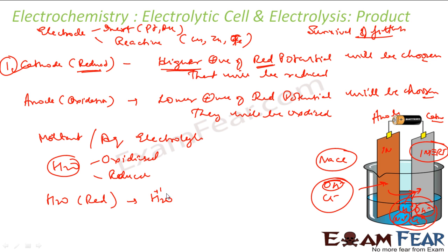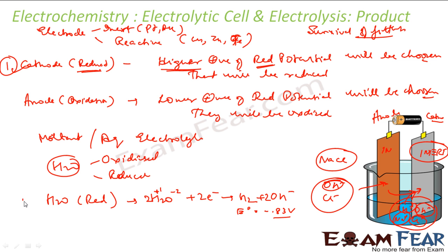For water reduction: hydrogen has a +1 charge and oxygen has a −2 charge, so the only possible reduction is H⁺ becoming hydrogen gas. Water takes electrons and becomes H₂, giving 2OH⁻ to balance. The balanced equation is: 2H₂O + 2e⁻ → H₂ + 2OH⁻, and the standard reduction potential E° = −0.83 V. The negative value means this is a non-spontaneous reaction — water will not reduce on its own.